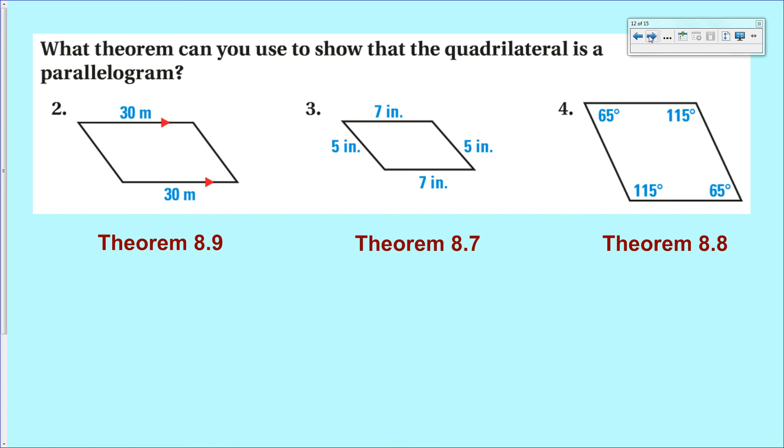Okay, here are the answers. Number two, theorem 8.9 says that if you've got two pairs of opposing sides congruent and parallel, it's a parallelogram.